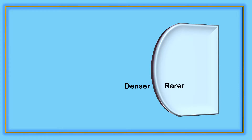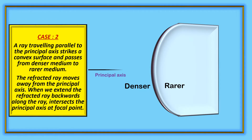The ray travels from denser medium to rarer medium, convex surface. Case 2: A ray traveling parallel to the principle axis strikes a convex surface and passes from denser medium to rarer medium. The refracted ray moves away from the principle axis.